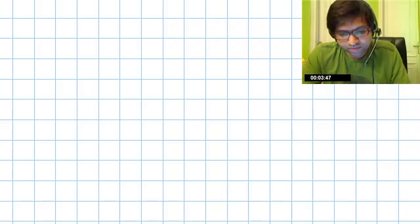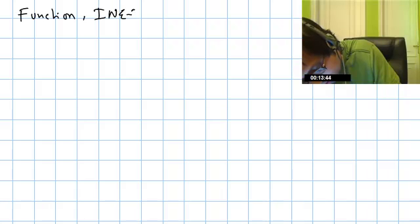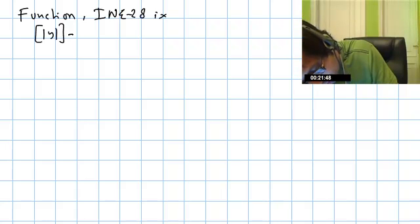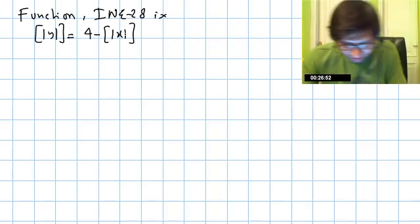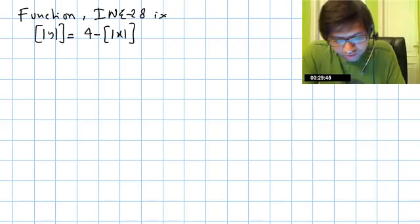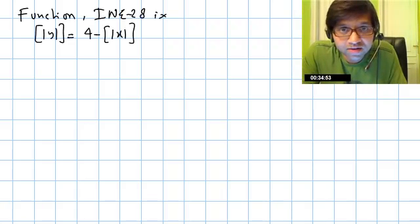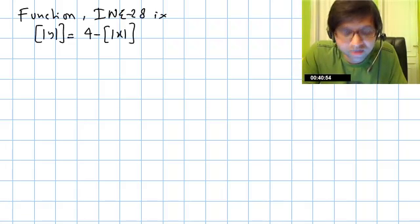This is a questions of functions module — INE question number 28, 9th part. We will discuss how to draw a graph of greatest integer of mod y equals to 4 minus greatest integer of mod x. This question was asked in the forum. The important thing is how to draw a graph of any function using transformation — not specifically this graph.